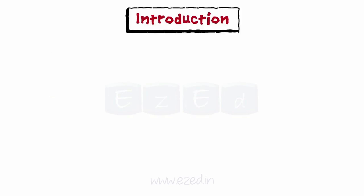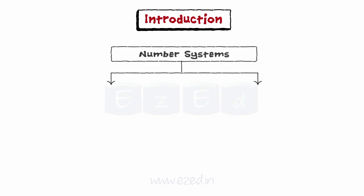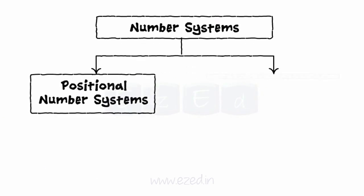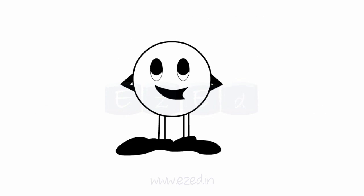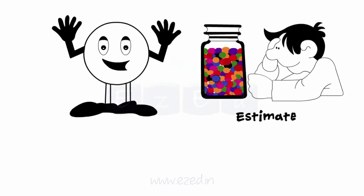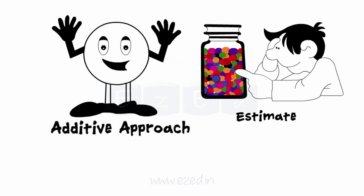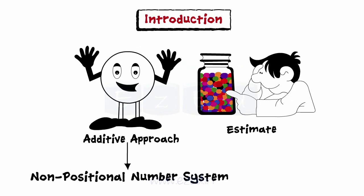Let us start with the introduction. Number systems are of two types, namely positional and non-positional number systems. Earlier, humans used to count on fingers to count up to 10, and to count beyond that, they used stones, pebbles, etc. This method uses an additive approach and is called the non-positional number system.